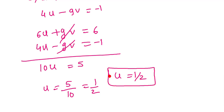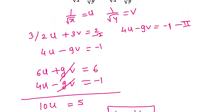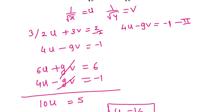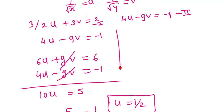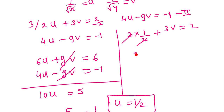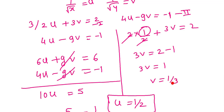Multiply equation 1 by 3: 6u + 9v = 6. Adding to equation 2: 4u - 9v = -1 gives 10u = 5, so u = 1/2. Putting u = 1/2 into equation 1: 2×(1/2) + 3v = 2, so 1 + 3v = 2, giving 3v = 1, so v = 1/3.